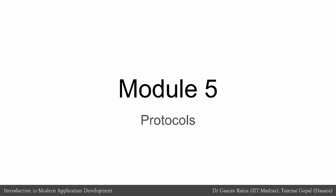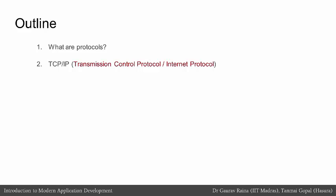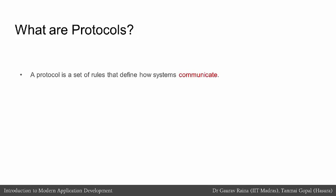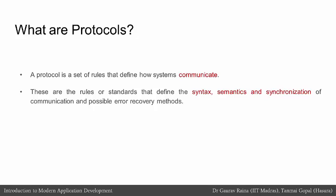The central message for this module, module number 5, is going to be centered around protocols. We first outline what protocols really are and then talk in detail about the most important protocol. A protocol is simply a set of rules that define how systems communicate — specifically the syntax, semantics, and synchronization of communication, and also possible error recovery methods.